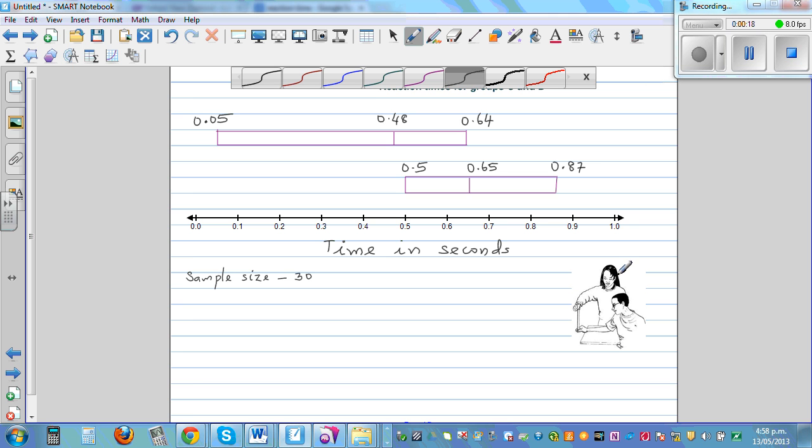So this person counts, say 1, 2, 3, and drops the ruler, and this person has to catch the ruler. So the time it takes for this person to catch the ruler is called reaction time. You can also measure reaction time in centimeters, but this is in seconds.